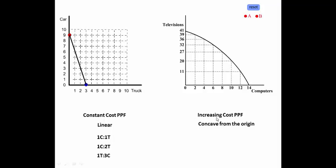Now for the Increasing Cost example using computers and televisions: to produce 2 computers, you have to give up 2 televisions. To produce an additional 2 computers, you now have to give up 3 televisions. To produce 2 more computers, you have to give up 4 televisions. And to produce yet another 2 computers, you have to give up 5 televisions, and so forth.